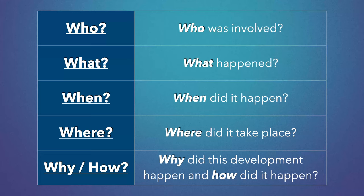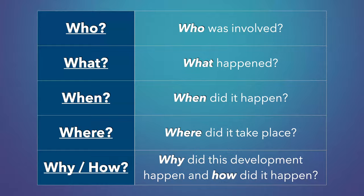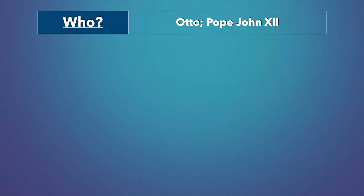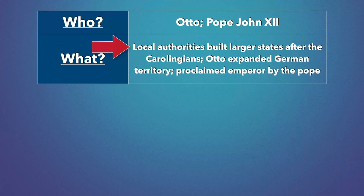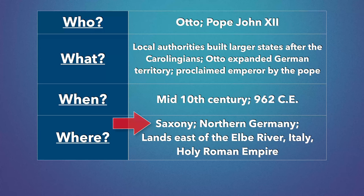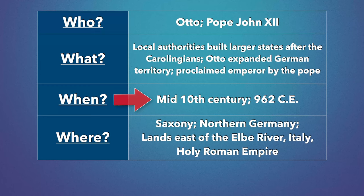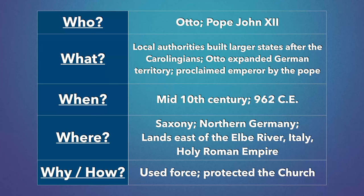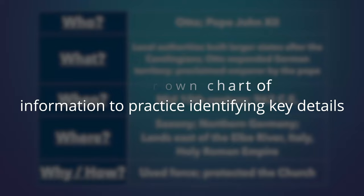If we were to identify the five W's for this paragraph, they may look something like this. For the who, I saw Otto and Pope John XII. For what happened, I saw that local authorities built larger states after the Carolingians, Otto expanded German territory, and Otto was proclaimed Emperor by the Pope. For the where, I saw Saxony, northern Germany, lands east of the Elbe River, Italy, and Holy Roman Empire. For the when, I saw the mid-10th century and the year 962 CE. For the why and how, I saw used force and protected the church. You may want to take notes similar to these before you begin the process of outlining, at least until you get comfortable doing this in your head.